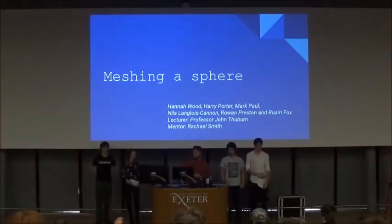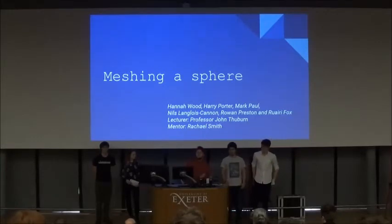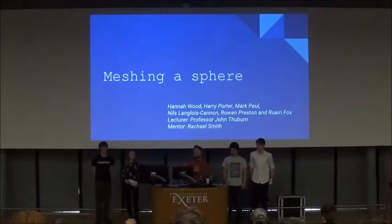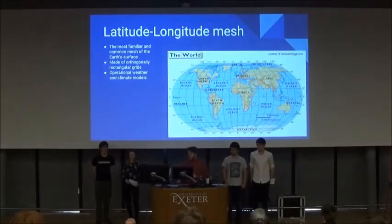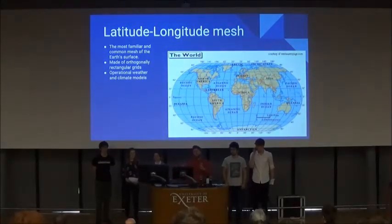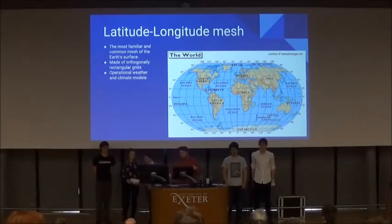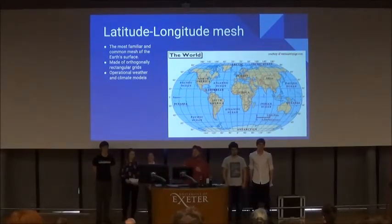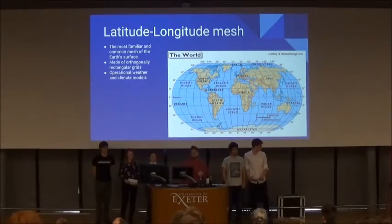Now I know you're thinking already, what is meshing a sphere? Well, it's when you take a 3D sphere and you change it and turn it into a 2D plane. For example, one of the first ways you can mesh a sphere is the latitude and longitude mesh, which is mainly used — you see it in maps when you just look at the world map.